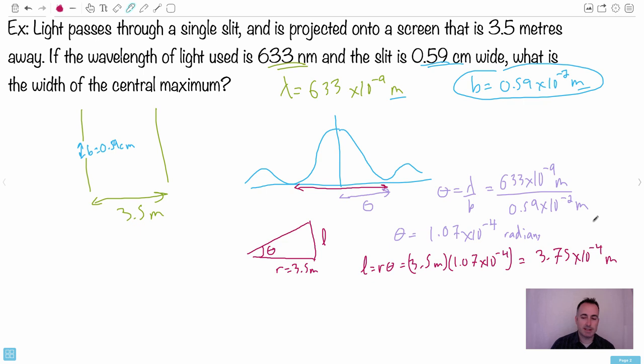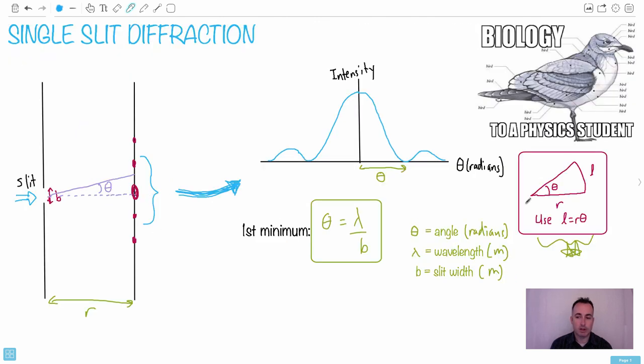Now here's the thing - this distance right here that I found, that's only the distance right here. If I want the width of the central maximum, I have to double that. So the width of the central maximum will just be equal to 2 times this 3.75 times 10 to the minus 4 meters. So I'll just do that times 2 on my calculator and I end up with an answer of 7.5 times 10 to the minus 4 meters, which is very small. This is 7.5 times 10 to the minus 4 meters, or you could say it's 0.7 millimeters. This is how you can use this single slit diffraction equation to solve a real life question.